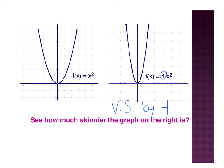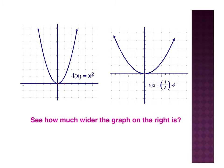Now let's take a look at what a compression would look like. This time out in front, I have a 1 third in front of the x squared. Once again, this 1 third is not being affected by my squared part. That 1 third is not being squared — even though the 1 third is in parentheses, it's not in the parentheses that are being affected by the squared. So this 1 third is not being squared.